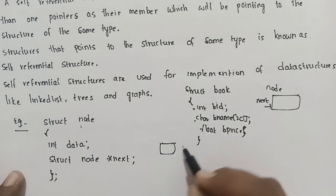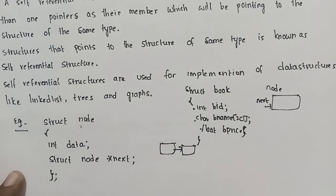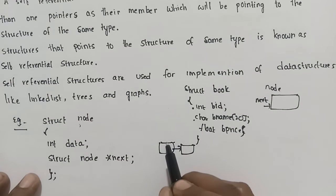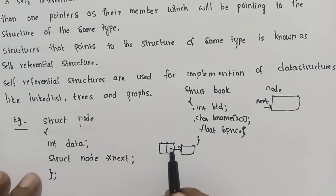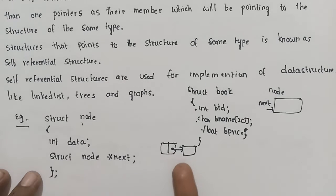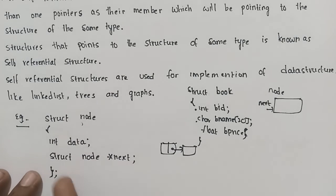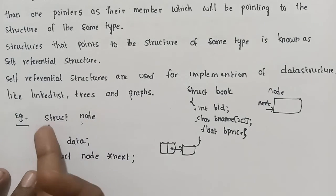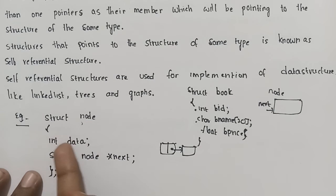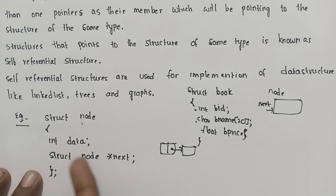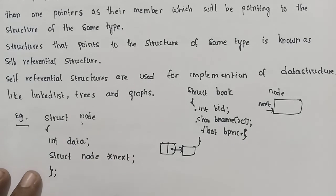Let's implement this. Suppose we have nodes in a linked list and we have a pointer here. The next node's address is stored in this list. When we implement the nodes, we use self-referential structures. We use this for linked list implementation, tree implementation, and graph implementation. The structure is called node, with data members and a next pointer creating the node.